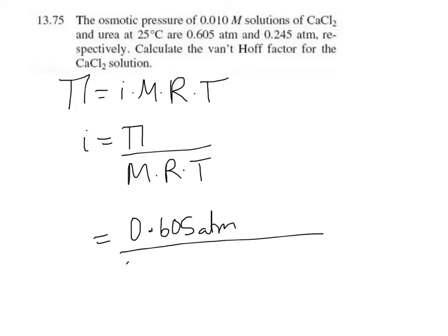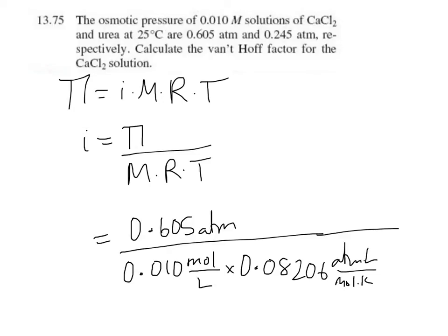And divide that by a couple of things. One is the molar concentration, 0.010. I'm going to write it as moles over liters because that shows the units cancelling easier. R is the gas constant, so 0.08206, and that's got units of atmosphere liters per mole kelvin. Our temperature is 25 degrees C, and we remember to add 273 to get kelvin temperatures, and that's 298. That's actually a pretty common temperature - that's one that normally I just kind of memorize that conversion.